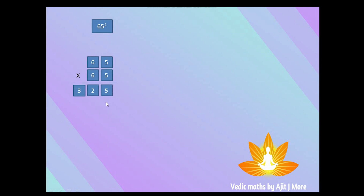In the next row, put 0, then multiply 6 with 5 — that is 30, write 0 and carry 3. Then 6 into 6 is 36, plus carry 3 becomes 39, write 3, 9. If you have any doubt please comment in the comment box.